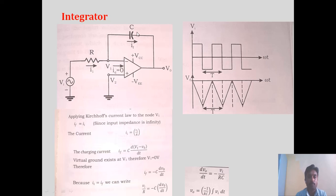Now the current flowing through the capacitor in this loop can be written as IF. IF is equal to the capacitor current: C into d(V1 − V0) divided by dT.